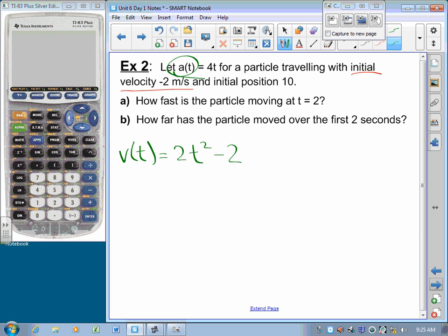And so I want to know how fast the particle is moving at time equals 2. That's 2 times 2 squared minus 2. A whole bunch of 2s cancel. 6 meters per second.